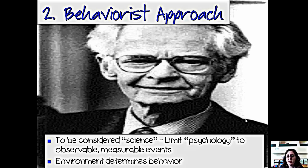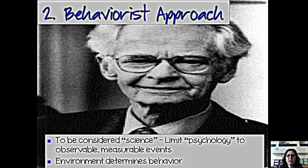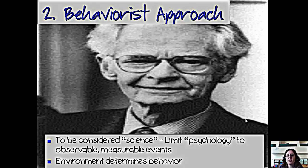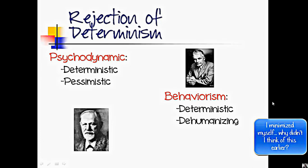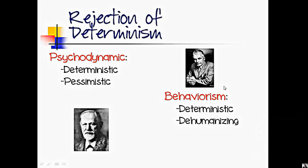Where the psychodynamic theorists believe that we do the things we do because of unconscious conflicts, the behaviorists believe we do the things we do because of the ways that we've been conditioned, rewarded, and punished in the past, or the ways that we've learned different behaviors. These first two approaches — the psychodynamic and the behaviorist — were extremely deterministic. They didn't believe that man had any control over his behaviors or could make his own rational choices. Psychologists later on started to reject this view and moved into more contemporary perspectives.